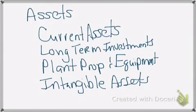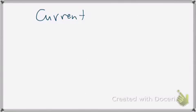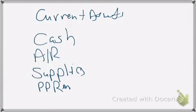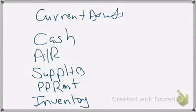With current assets, these are assets that the company expects to convert to cash or actually use up within one year or one operating cycle. Items that are included with current assets are going to be things such as cash, accounts receivable, supplies, those prepaid items like prepaid rent and prepaid insurance. You also will see inventory listed as one of those items.